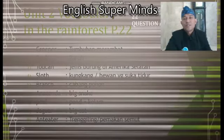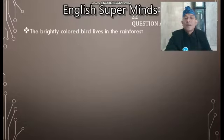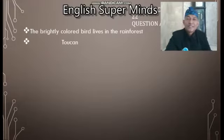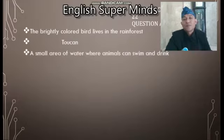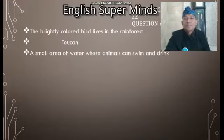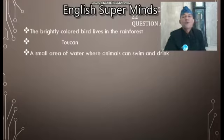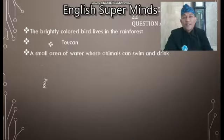Let's go to question and answer. Pertanyaannya adalah: The brightly colored bird lives in the rainforest — burung yang berwarna-warni, apa itu? Toucan. And: A small area of water where animals can swim and drink — tempat yang kecil yang ada airnya, dimana hewan-hewan dapat berenang dan minum. Pool.